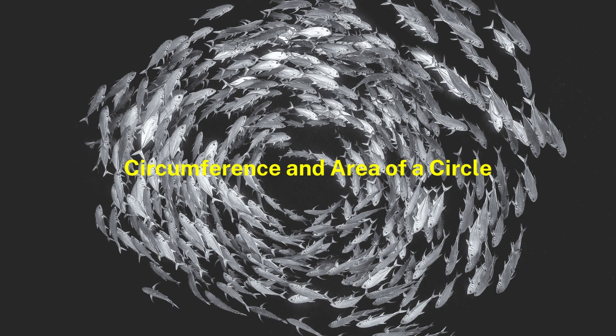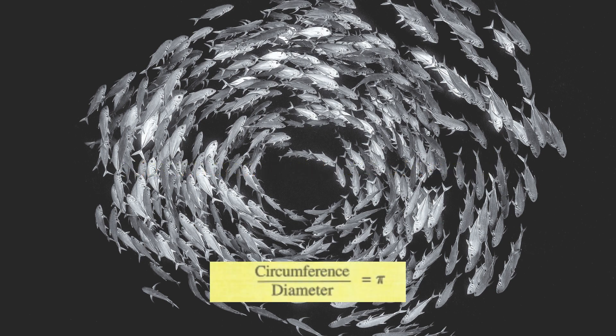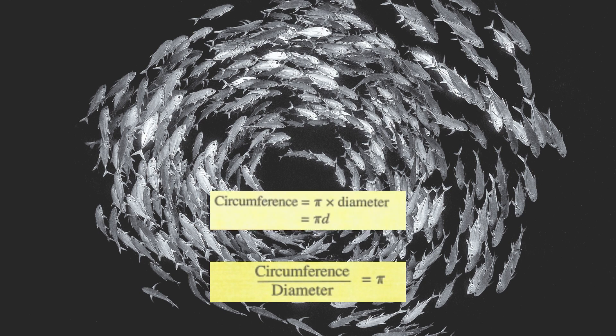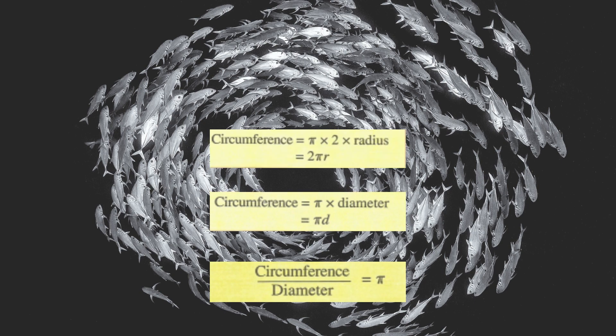Next, the circumference and area of a circle. The ratio of circumference to diameter is pi which is 3.142 or 22 over 7. The circumference of a circle is pi multiplied by the diameter. The circumference of a circle can also be expressed as 2 pi r.